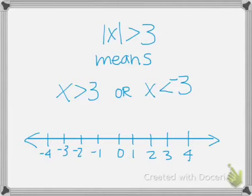For example, greater than 3 and less than negative 3 — the graph is going to look like two different parts, one on each side of the number line.